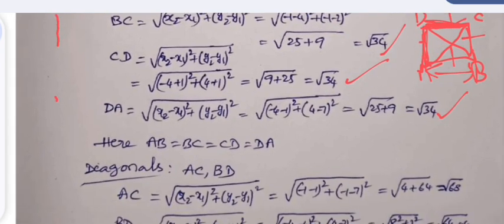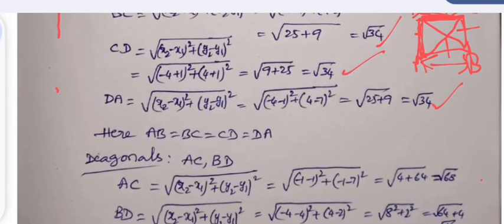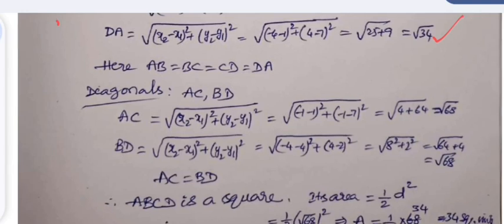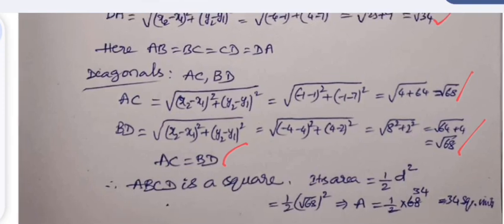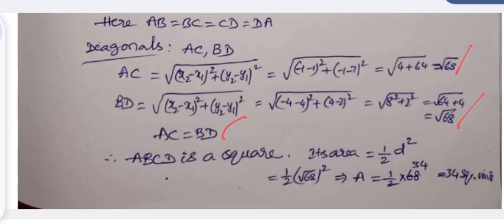The two diagonals AC and BD are calculated: AC = √68 and BD = √68. Since AC = BD, the diagonals are equal. Therefore the given quadrilateral ABCD is a square. Its area = side² = (√34)² = 34 square units. Alternatively, using the diagonal formula: area = ½d² = ½(√68)² = ½ × 68 = 34 square units.